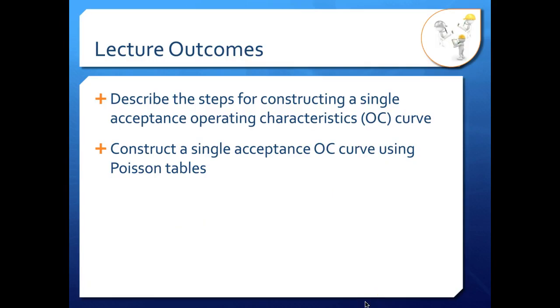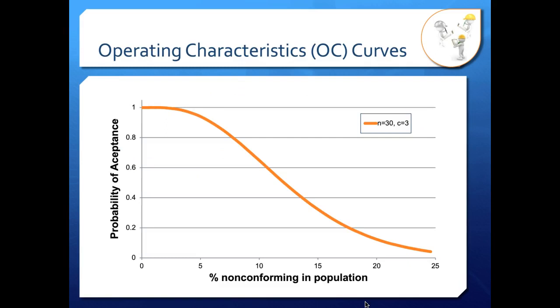In this video, we're going to look at the steps for constructing a single acceptance OC curve, and we're going to actually do the calculations for a single point using the Poisson tables. Notice that I said we can do Excel to do this at the beginning of the video, and we can. I do have a video on that. The link to that video is listed in the video description below. For now, we're going to look at how you do it with the Poisson tables and hand calculations.